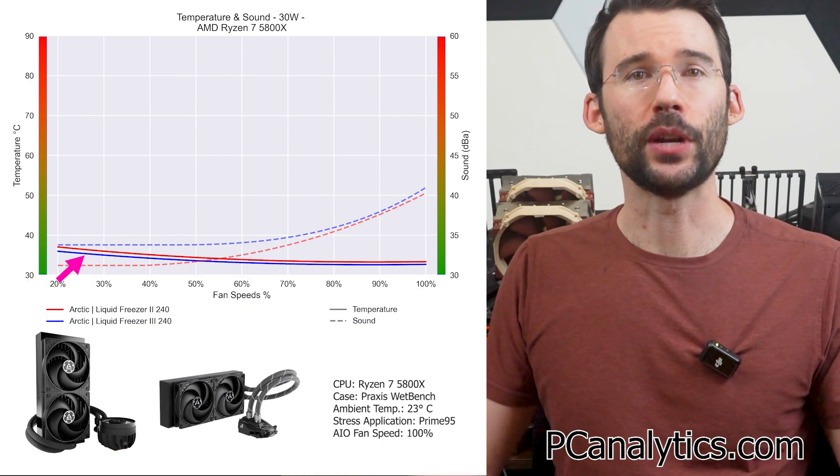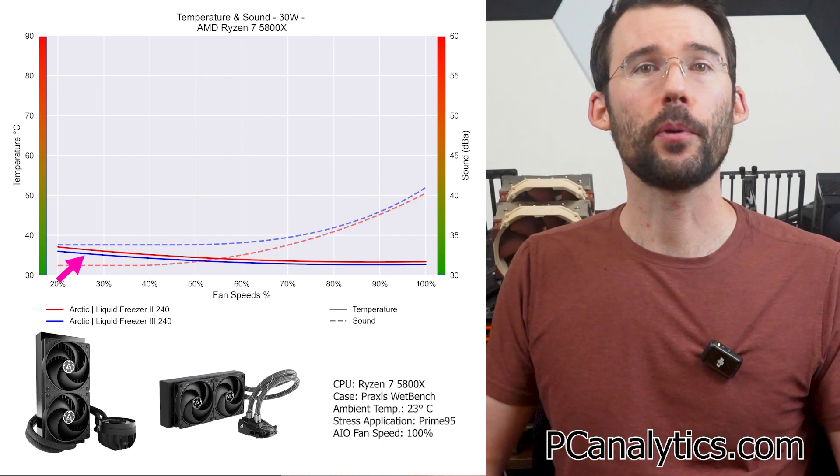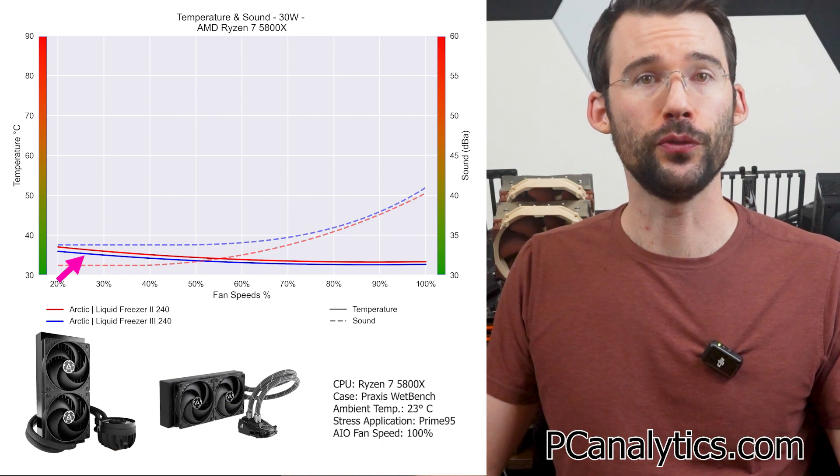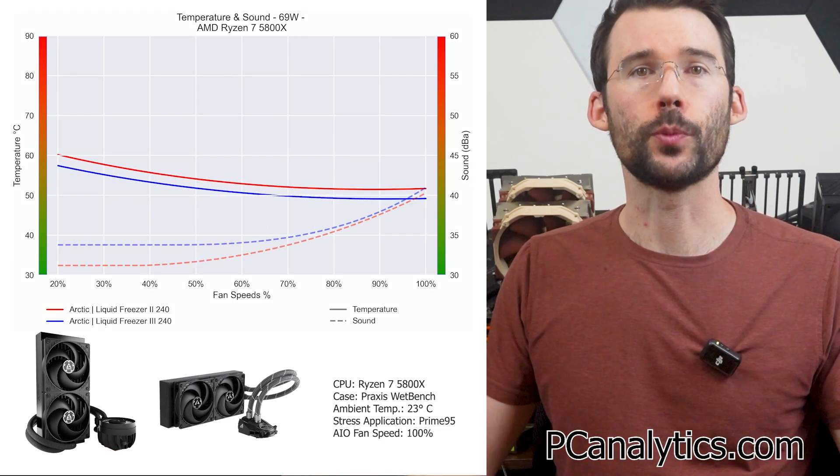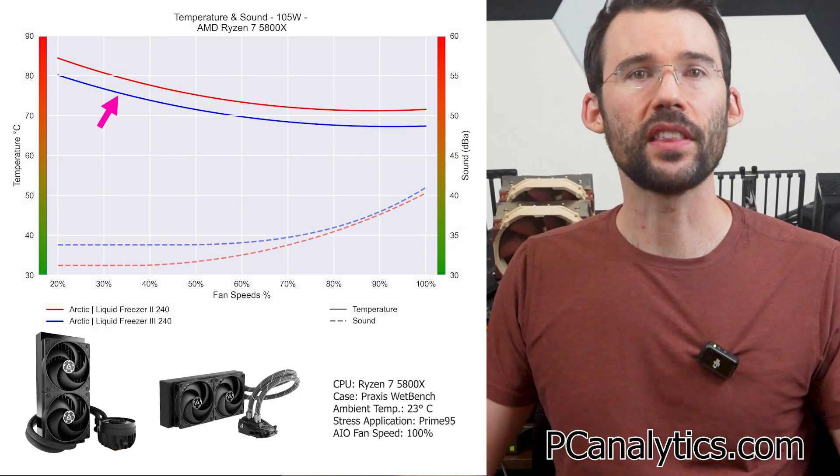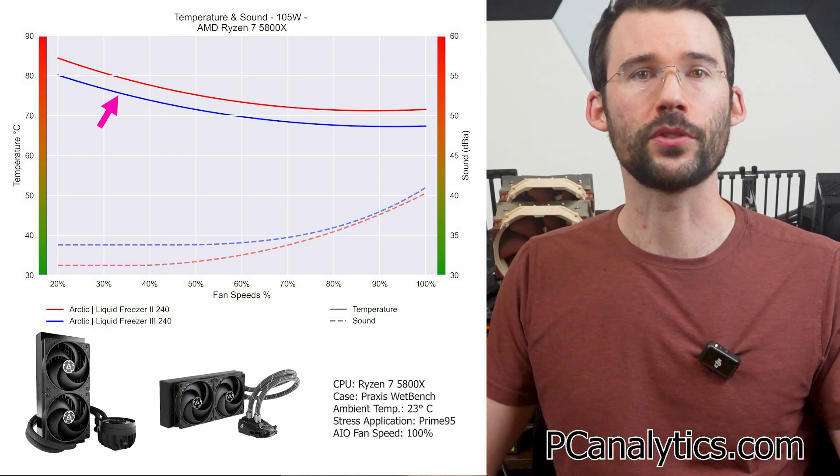At idle, the Liquid Freezer 3, 240, in blue has similar performance relative to the Liquid Freezer 2, 240, in red. As we increase the wattage to 105 watts, we can observe that the Liquid Freezer 3 has improved performance across the board.